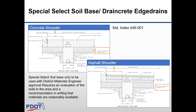The special select soil base is placed on the top 60 inches of embankment to provide a permeable working platform. Three inches of number 57 or number 89 coarse aggregate is placed on top of the special select soil and mixed into the top 6 inches. The district materials engineer must complete an evaluation of the soils and make their recommendation in writing that the materials are reasonably available in order to use this option.